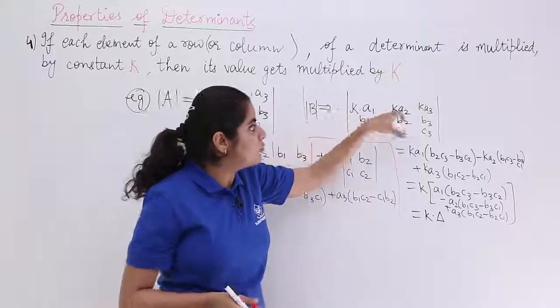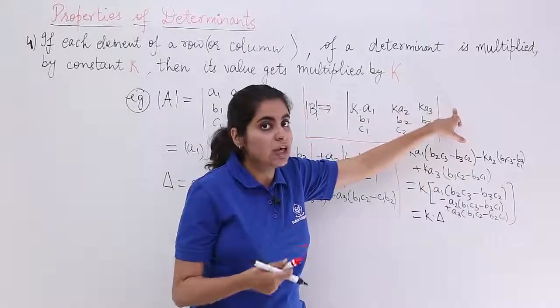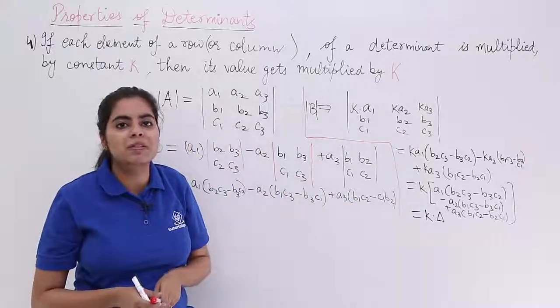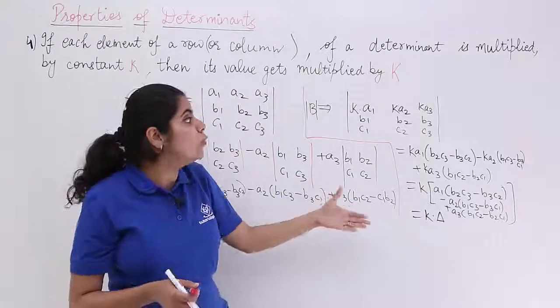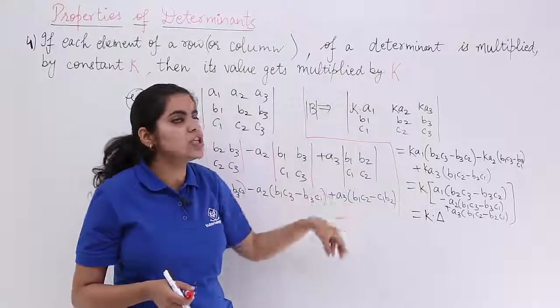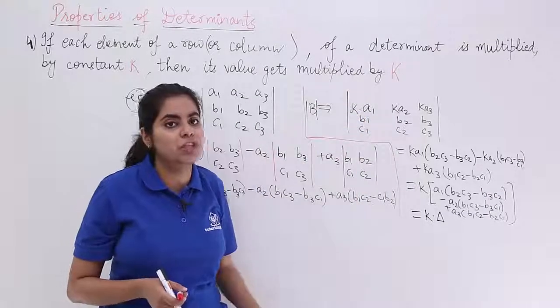So, if you multiply first row by a constant, the value of determinant has been multiplied by a constant. Similarly, had you applied this thing, had you multiplied by K in the first column, again the value would have changed.